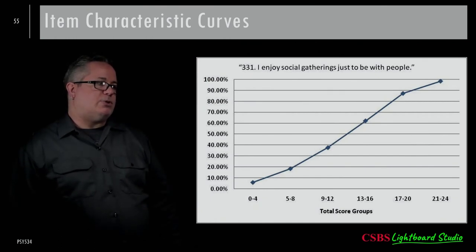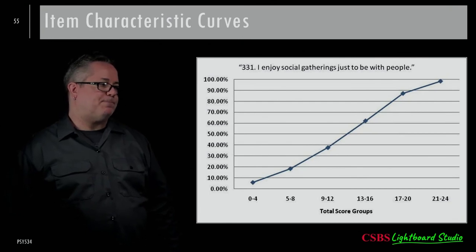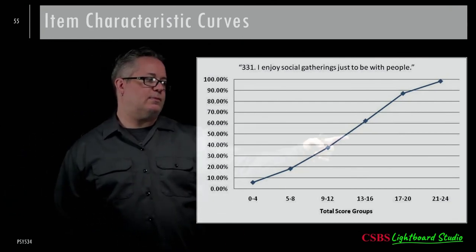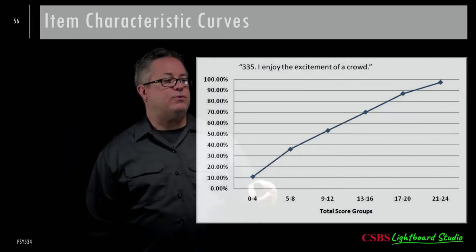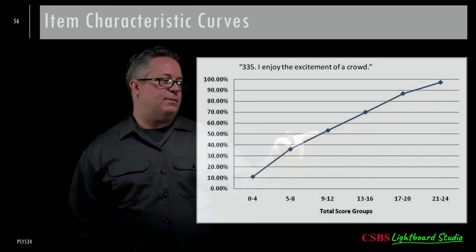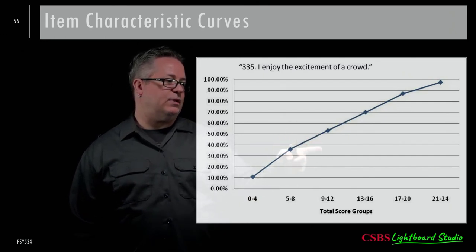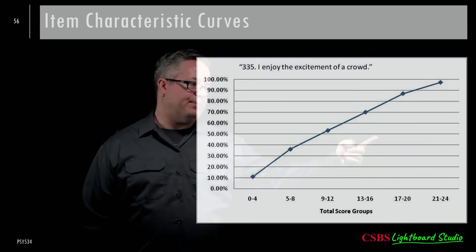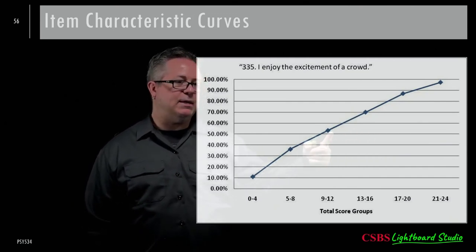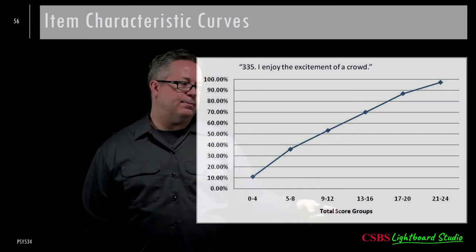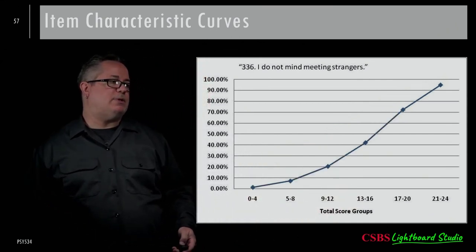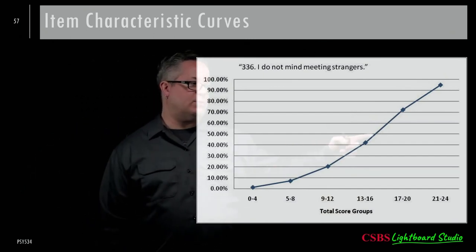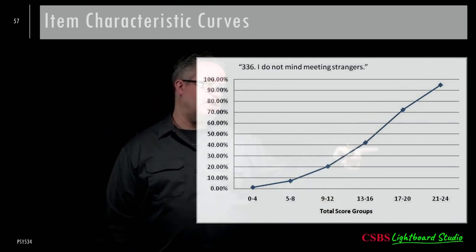Looking at a few more items: 'I enjoy social gatherings just to be with people' — not super discriminating, difficulty around the middle. Most of the MMPI social anxiety items seem to be targeting people around medium social anxiety levels — they're all bunched up in the middle of the trait distribution. One slightly more difficult item helps spread things out a little.